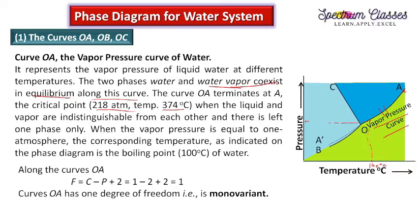For the degree of freedom along curve OA, we apply F = C − P + 2. With C = 1 (one component: water) and P = 2 (liquid and gas phases), we get F = 1. So the system is monovariant — along this curve, one pressure corresponds to one temperature only.